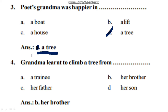Question number 4: Grandma learned to climb a tree from — Option A: a trainee, Option B: her brother, Option C: her father, Option D: a person. The right answer is Option B — her brother. Her loving brother taught grandma to climb a tree.